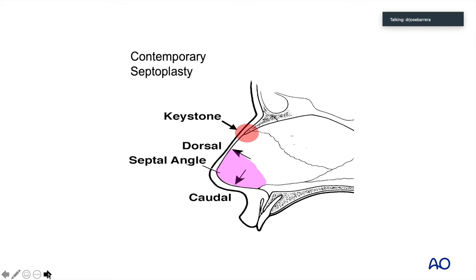Very particular to this topic is the preservation of the keystone, which is an area where the perpendicular plate of the ethmoid articulates with the nasal bone and the upper lateral cartilage. This area can saddle if there is over-resection. In addition, there is the caudal septum — under-resection can lead to polybeak formation, and over-resection can lead to saddling as well as nasal obstruction from caudal septal deviation.